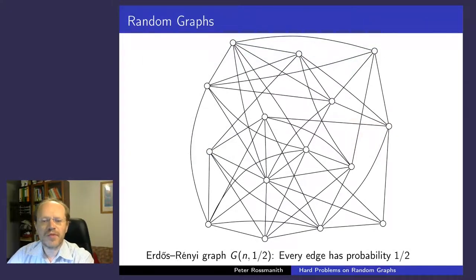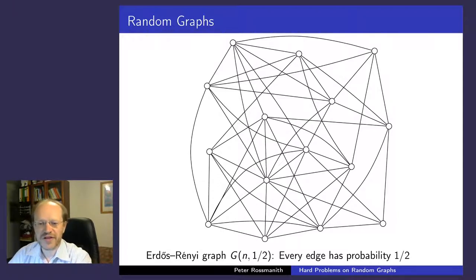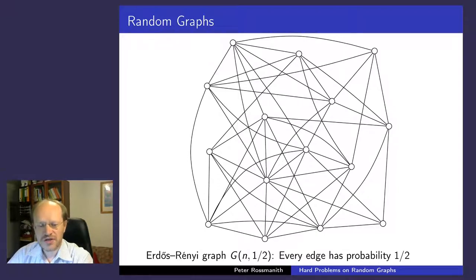In this context, a random graph is a very simple model: the Erdős-Rényi graph, most of the time with an edge probability of one half. Every edge has a probability of existence of exactly one half, independently from each other.